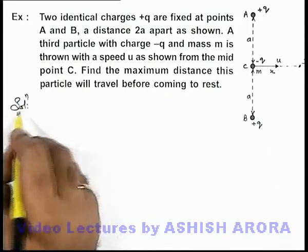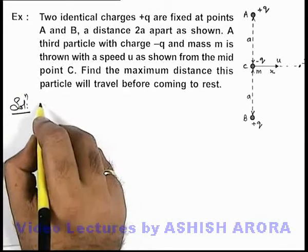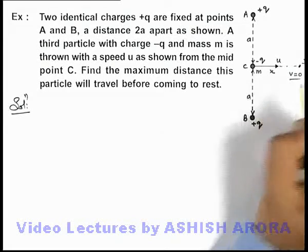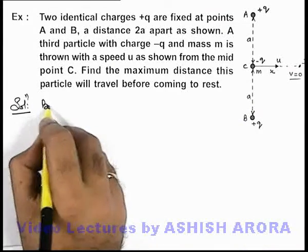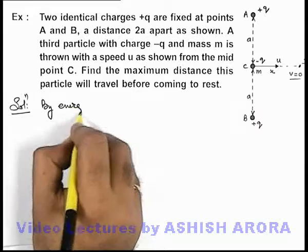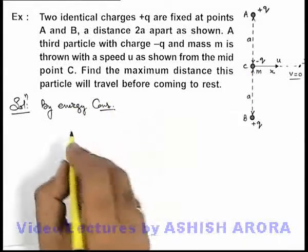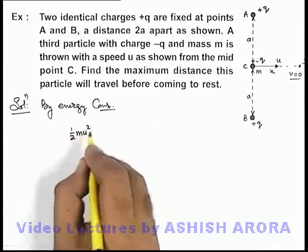We can use energy conservation. If it reaches point D where its final speed becomes zero, then we can say by energy conservation, when it was at point C its kinetic energy was ½mu².